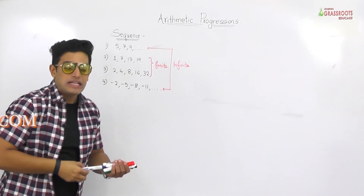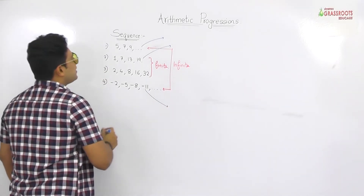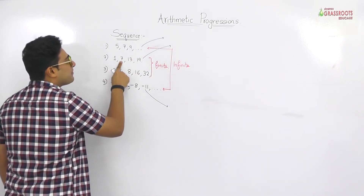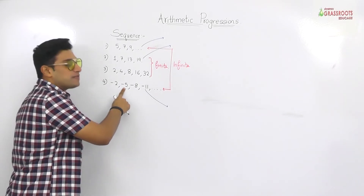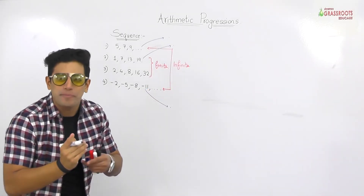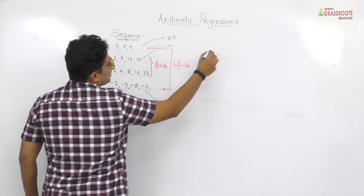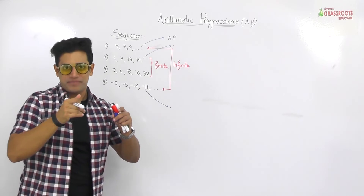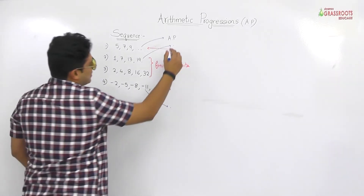Out of the examples given, 3 examples are based on addition. Like: 5 plus 2 is 7, 7 plus 2 is 9, and so on. Then 1 plus 6, 7 plus 6 and so on. And minus 2 minus 3 gives minus 5, minus 5 minus 3 gives minus 8, minus 8 minus 3 gives minus 11. So sequences 1, 2, and 3 are based on addition and subtraction. We call them arithmetic progressions — AP for short. We also call these progressions. A progression is a set of numbers in a particular order, in a particular pattern, in a particular trend.